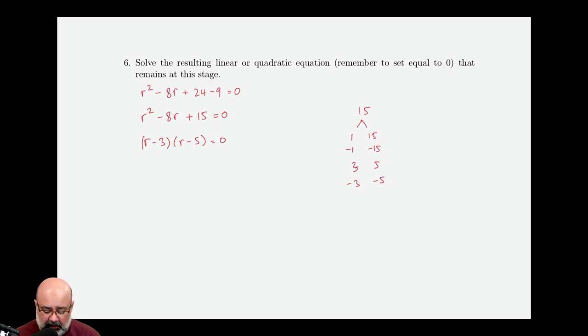Now the zero product property can be invoked, which says that if we have a zero on one side and products on the other side, each of those factors must be set equal to zero, because I don't know where the zero is coming from. So if r minus three is equal to zero, that means r would equal three. And if r minus five is equal to zero, that means r would equal five.